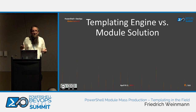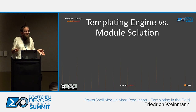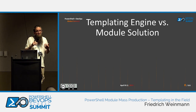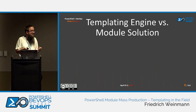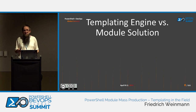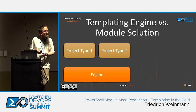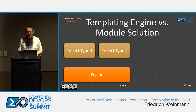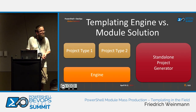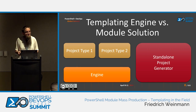The first disambiguation I want to deal with: we have two separate aspects — the templating engine and a module solution. The templating engine, from my perspective, is a code tool that generates projects and can be provided with different templates to generate different kinds of projects. A module solution gives me a PowerShell module as the finished result. The difference is I can use a templating engine for a lot more than just PowerShell modules.